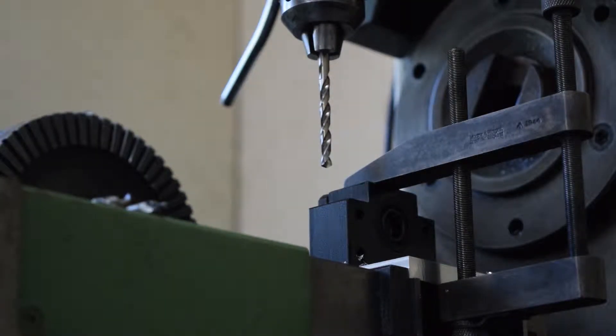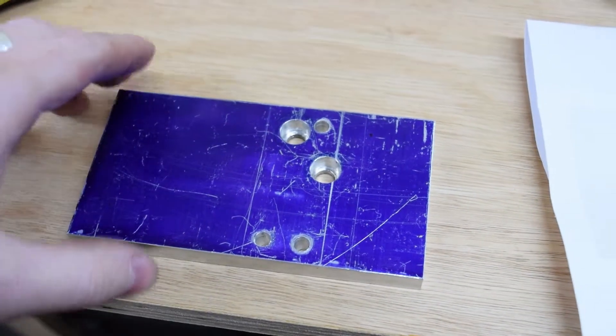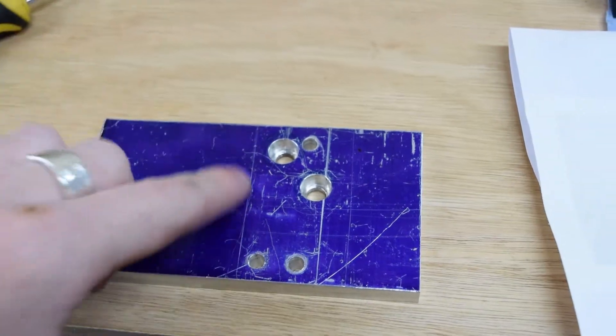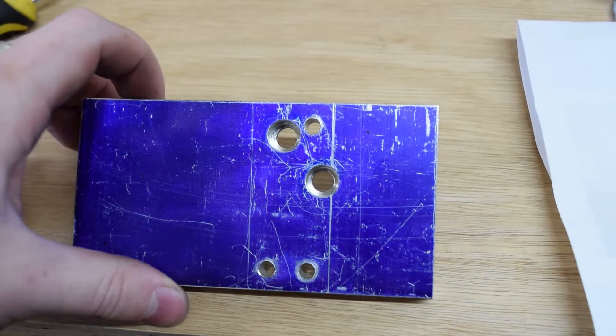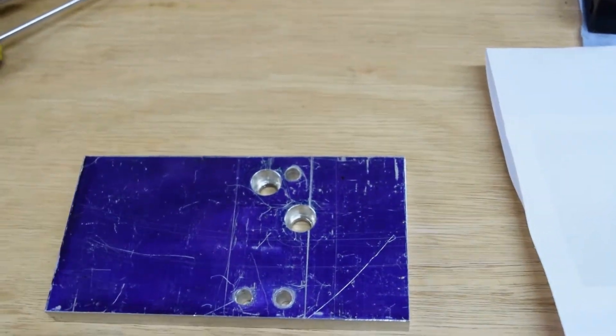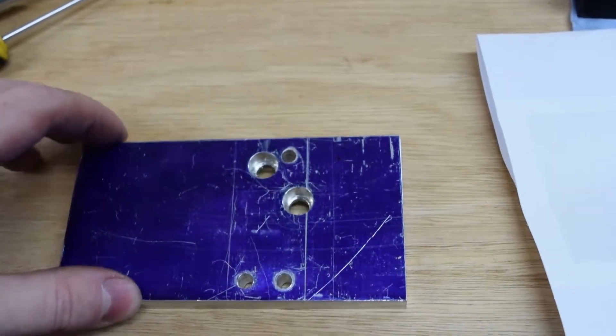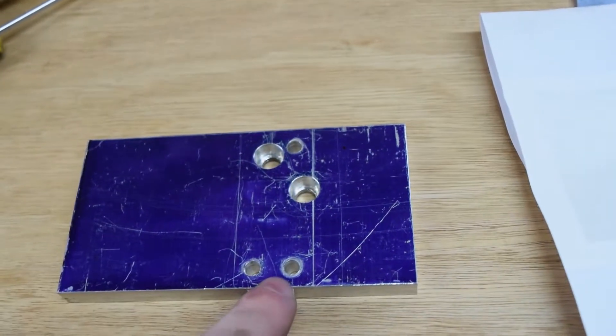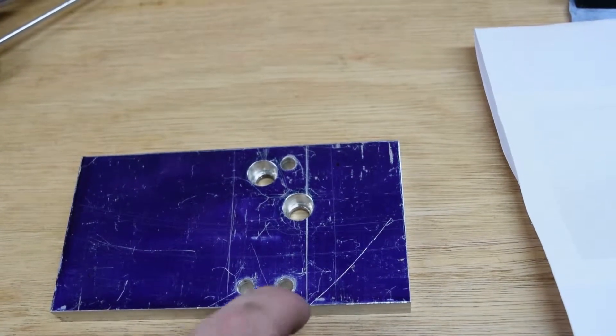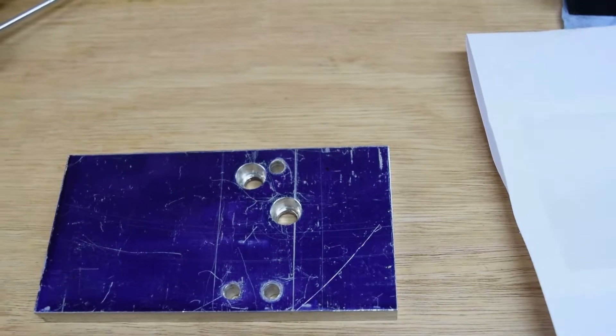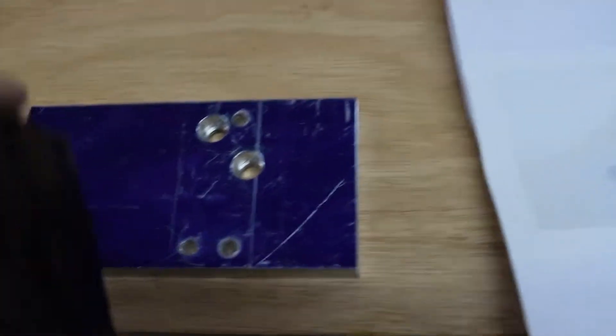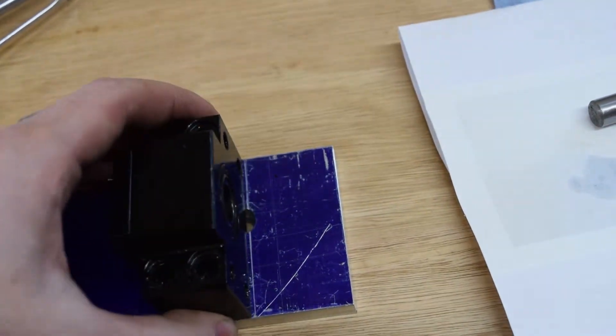I'll move on to the next one. OK, so this is what it looks like now. The two counterboard holes there match up with two existing holes on the lathe. So that's how it bolts into the lathe. And then these three I'm about to tap M6 to mount the block onto.